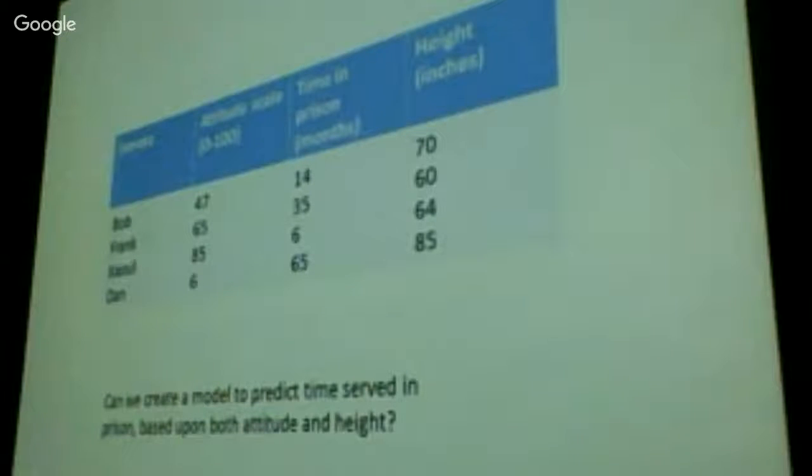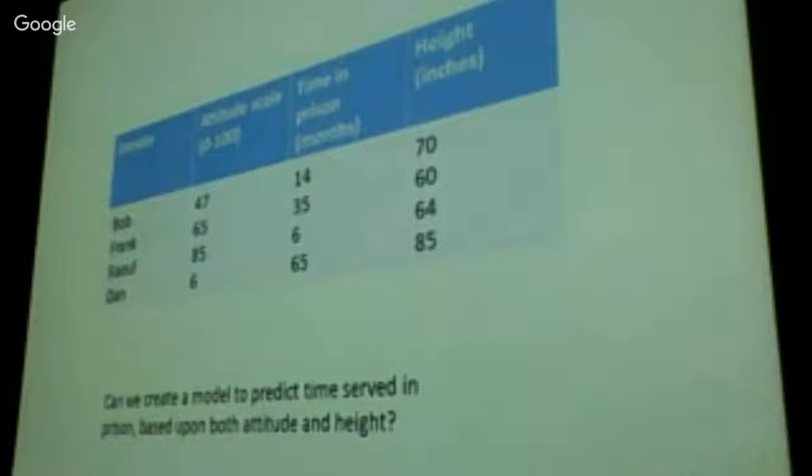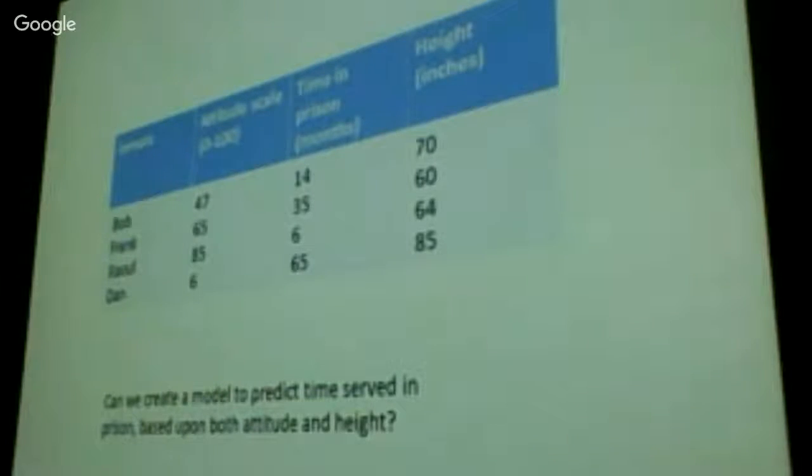We have a way of predicting their time in prison based upon their attitude. Let's say now we have another factor, their height. Let's say you can predict their time in prison based upon their height. Why not? We can do anything, by the way. Multivariable statistics are so much fun that they can create relationships that don't actually exist. Let's see if we can predict who's going to win the biggest loser. Use this technique. Yeah, we could. It doesn't mean anything. Maybe it's a fluke.